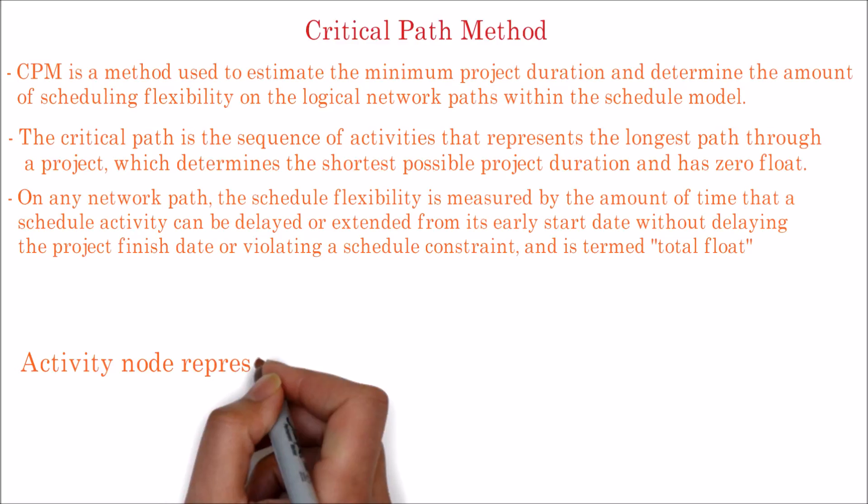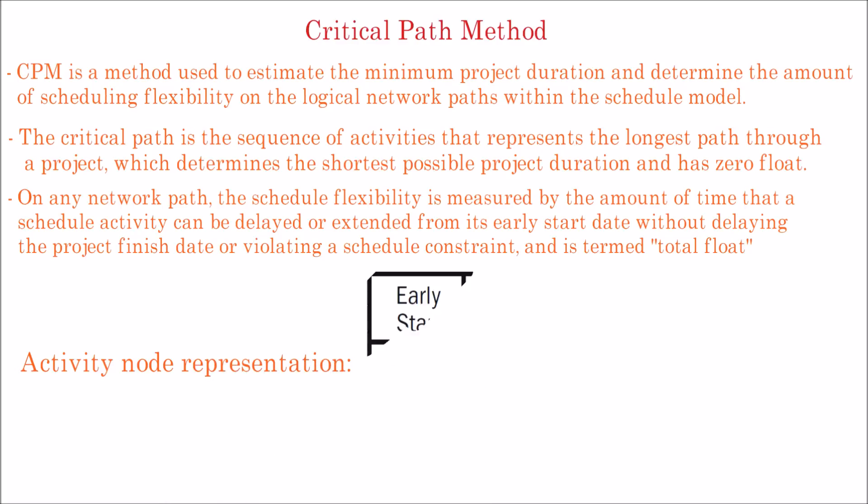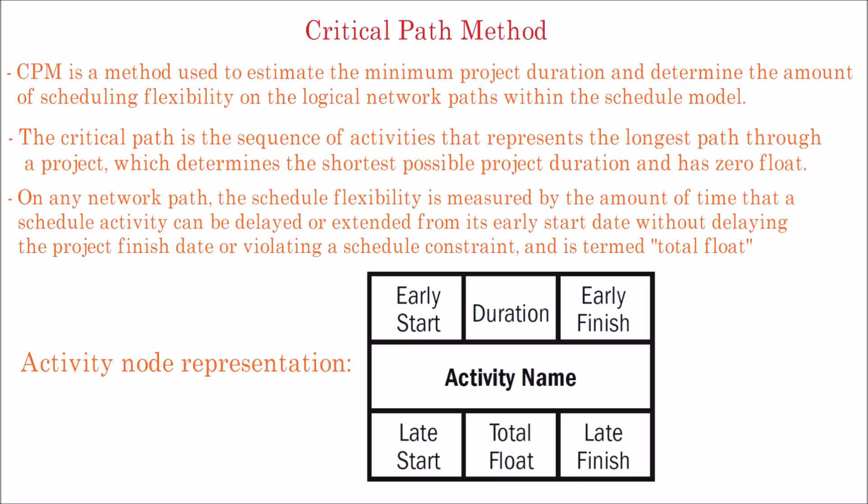Let's see how the activity node is represented in CPM. Each activity is mentioned in a rectangle where the activity name is mentioned in the middle. Both top and bottom rows are split into three columns. The top left box represents early start date, top middle box represents the duration of the activity, top right box represents early finish date. Bottom left box represents late start date, bottom middle box represents total float available for the activity, bottom right box represents late finish date.